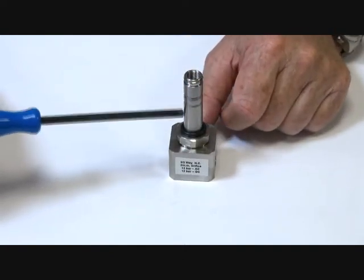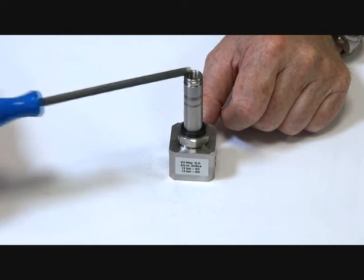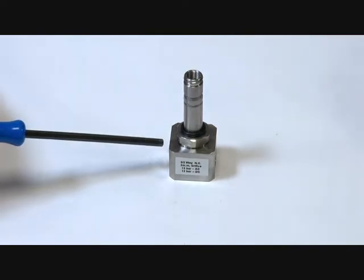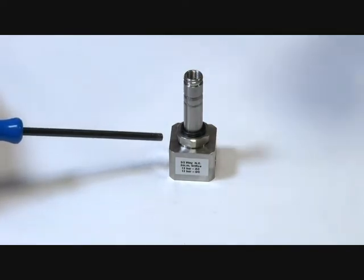When it's energized, the armature comes up, blocks off the top port. You get port 1 and 2 connected, allowing supply through. When de-energized, the downstream exhausts through the top.